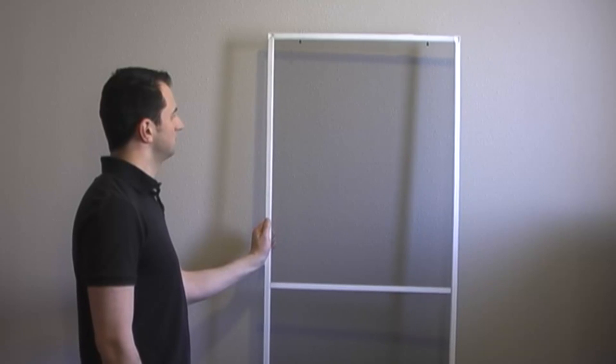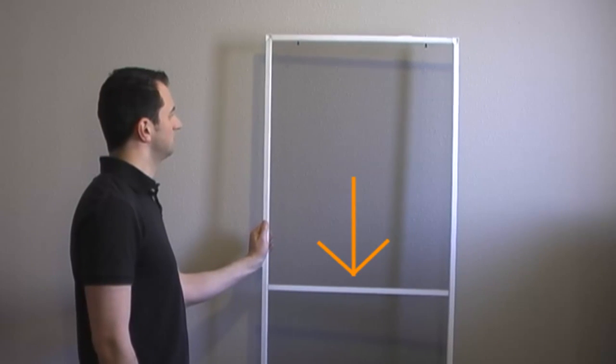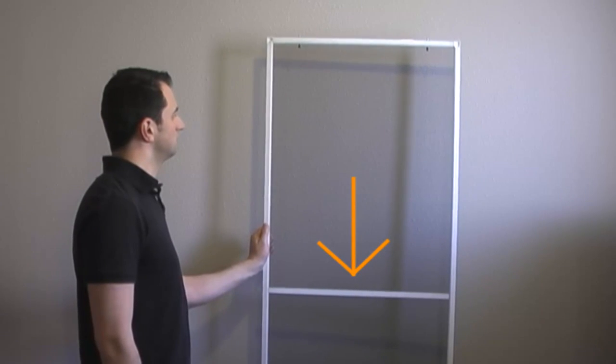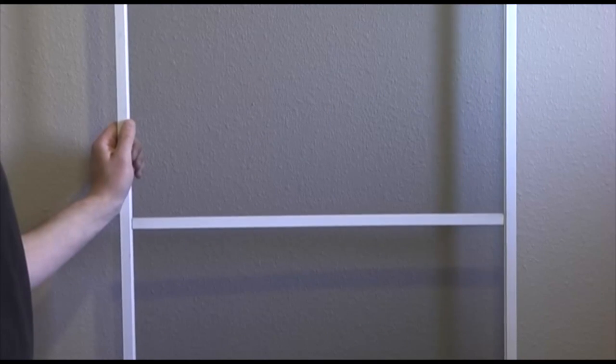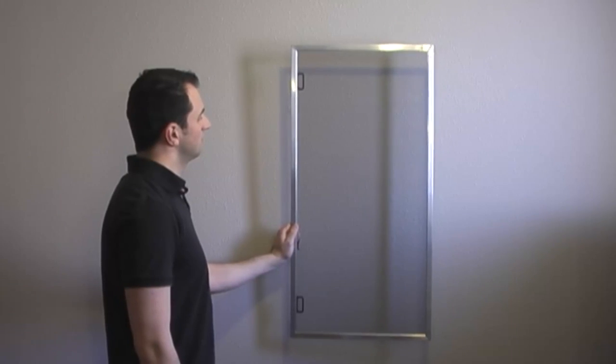Now choose if your window screen has a crossbar. This window screen has a crossbar parallel with the short sides. This window screen does not.